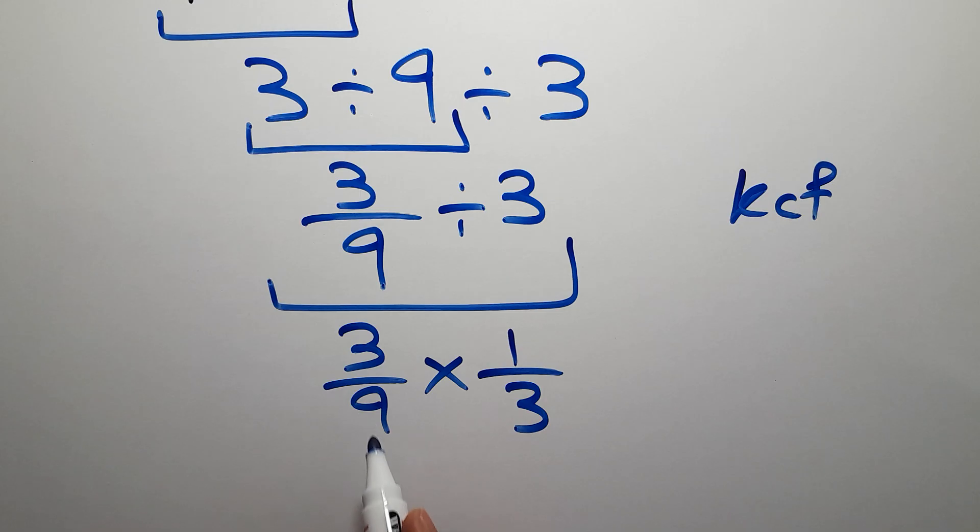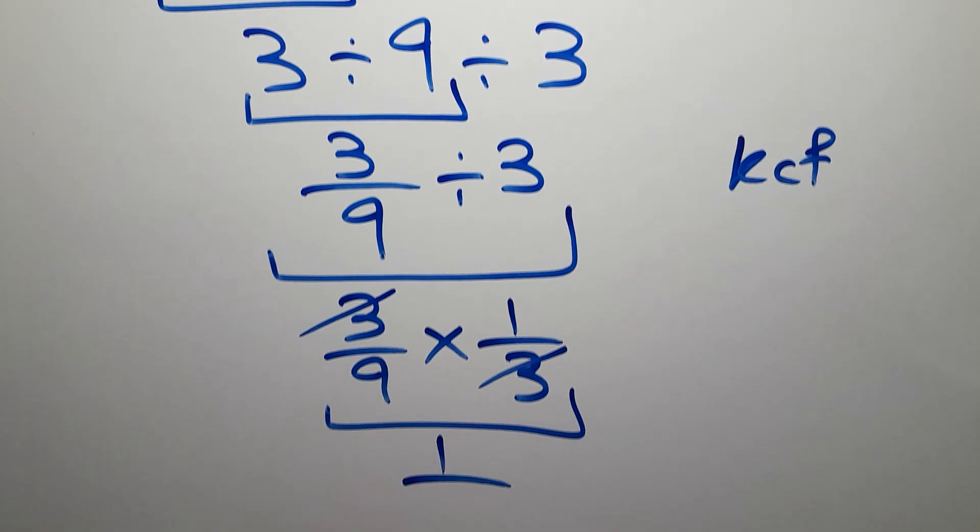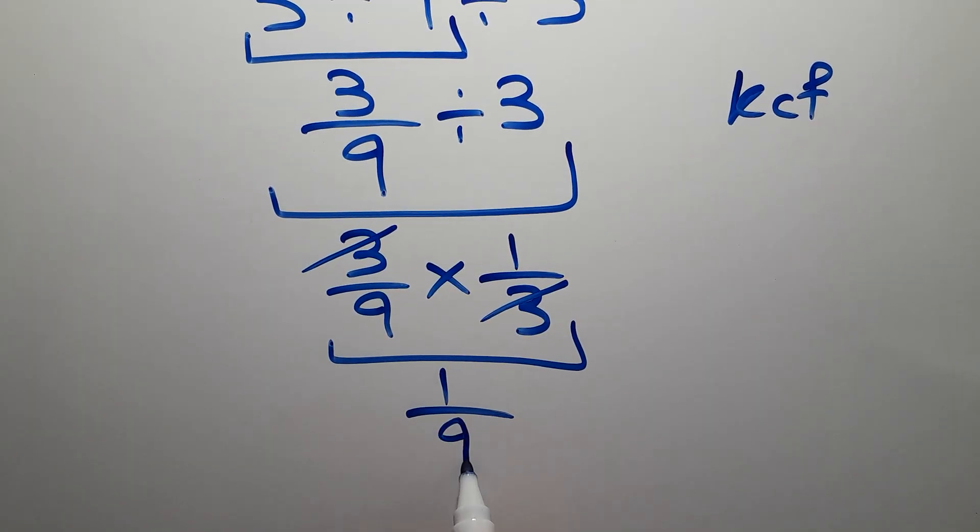So we have 3 over 9 times 1 over 3. We can easily cancel this 3 and this 3, so we have just 1 over 9. And this is our final answer to this problem.